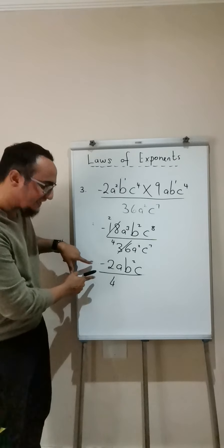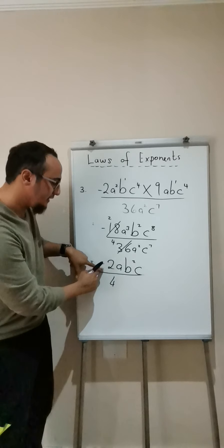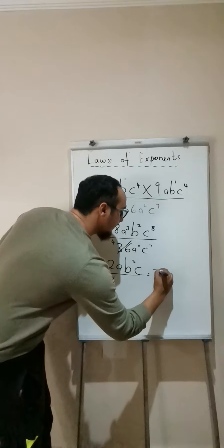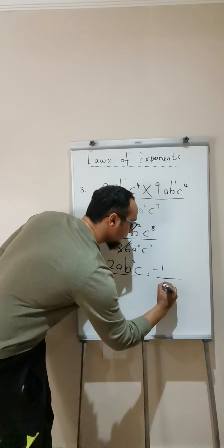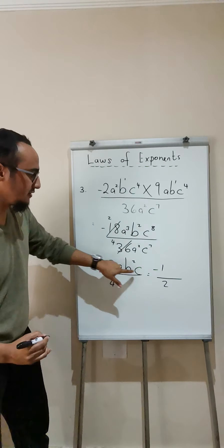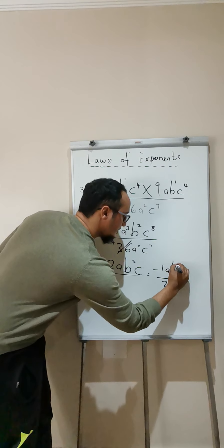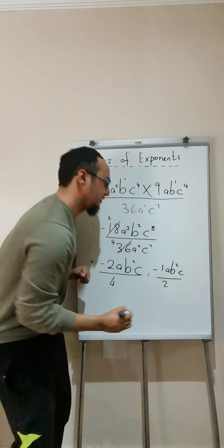Now, remember, I can go further over here. Negative 2 divided by 4 is going to be equal to negative 1 half. And then this stays exactly the same. So, that is A, B squared and C.